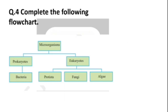Question number 4: Complete the following flow chart. Microorganisms are divided into two parts — prokaryotic and eukaryotic. Prokaryotes include bacteria, whereas eukaryotes include Protista, fungi, and algae.